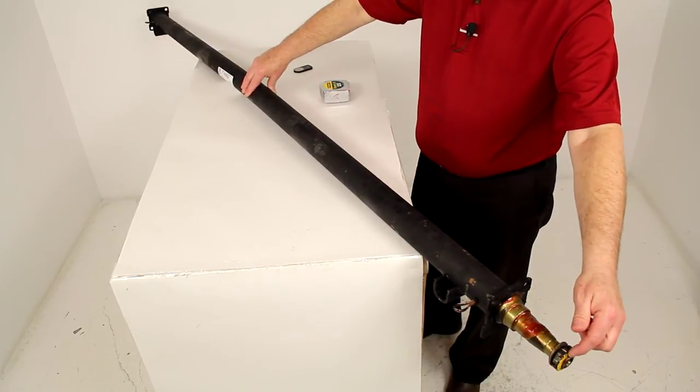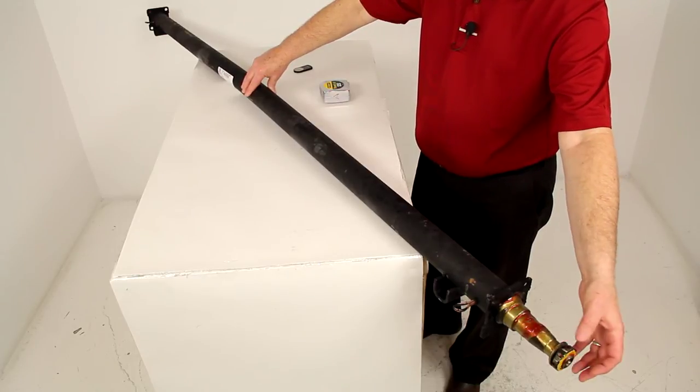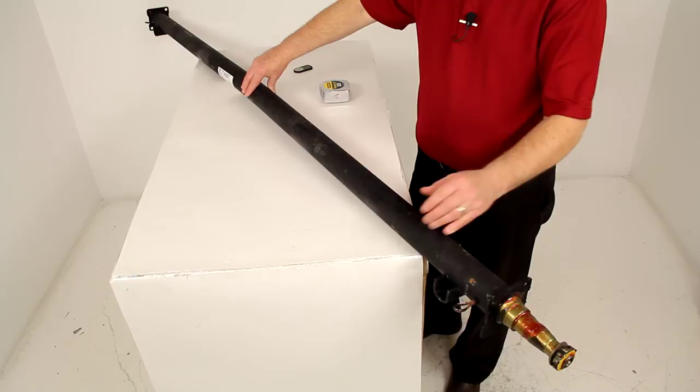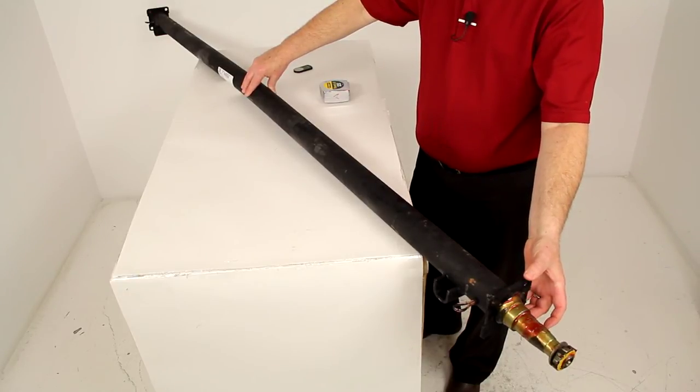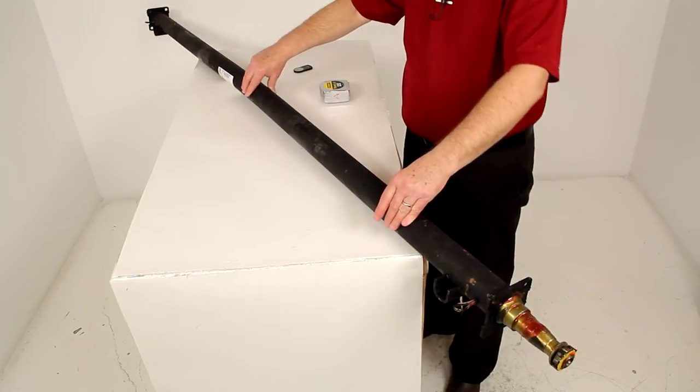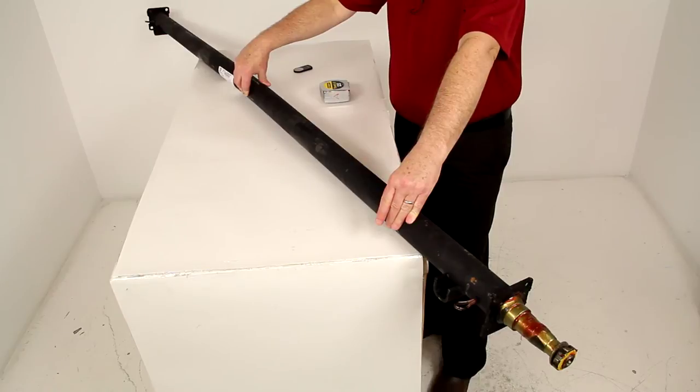Now the spindle nut, the nut retainer and the dust washer all come with this axle. Now the spring seats, the brake flanges here, the four bolt brake flanges and the spindles are all welded on. The weight capacity on this is 3500 pounds.